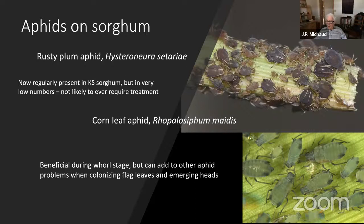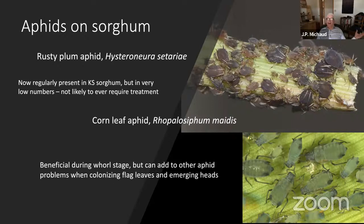A particular concern may be the corn leaf aphid. We used to think of this as a beneficial species when it was largely confined to infesting sorghum in whorl stage. They will go down and begin a colony deep in the whorl, and corn leaf aphid does no harm at that growth stage. What it does do is attract a lot of aphid natural enemies, and it's a suitable host for the parasitoids too. So you get all these natural enemies colonizing your crop before the arrival of more damaging aphids like green bugs.